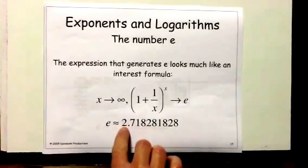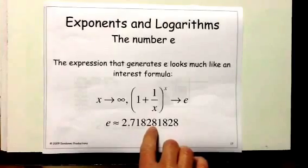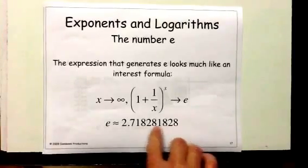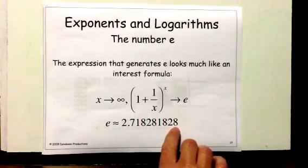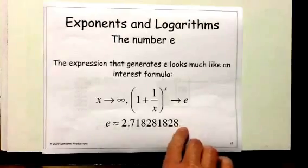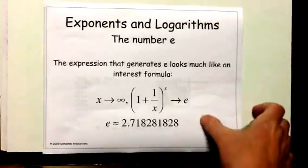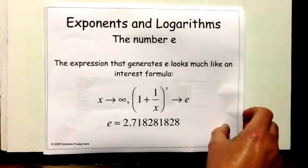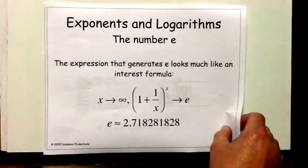e is approximately equal to 2.718281828. It looks like there might be a repeating part here, but that's just kind of fluky. The decimals after that don't repeat. e is an irrational number.